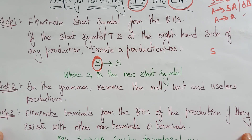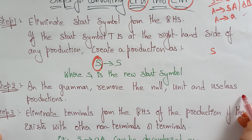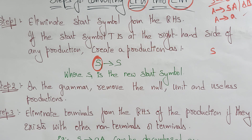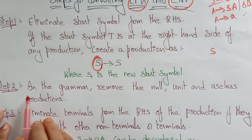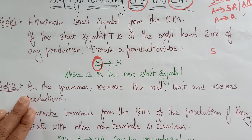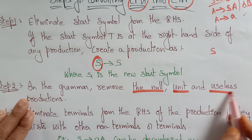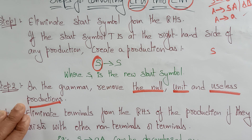The second step is: remove the null productions, unit productions, and useless productions from the grammar. This is called simplification of the context-free grammar. If you want to convert into Chomsky normal form, you first need to simplify the CFG by removing these three types of productions. I already explained this in the previous video, so if you want to know how to remove null, unit, and useless productions, please follow my previous videos.